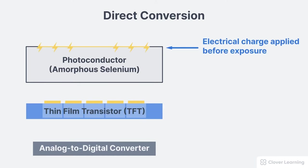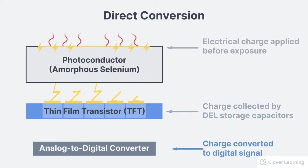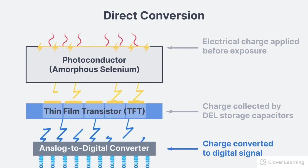When a direct conversion DR system is in use, a voltage is applied to the top surface of the detector just before the exposure is made. The x-ray beam then interacts directly with the amorphous selenium, causing the selenium atoms to release electrons, creating an electronic charge. Storage capacitors in the DELs collect the charge. After the exposure, the TFT switches release the electrical charges from the individual DELs to the analog-to-digital converter, which converts them to a digital signal used to produce the digital image.